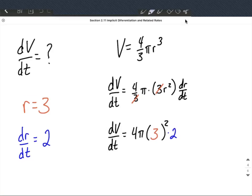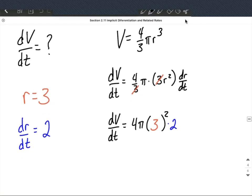Alright, from here it's just a little bit of simplifying down and we'll have our solution. So dV/dt is going to be 4 times π times 9 times 2.